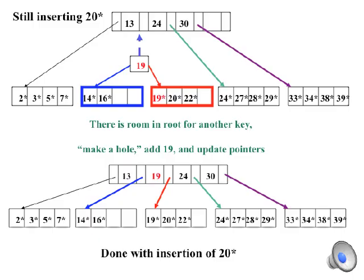The top figure shows that I passed 19 up together with two pointers, one to the blue and one to the red leaf. I've also color-coded two other pointers, green and purple, to the right. This top figure shows that there is room for 19 at the root. So as shown in the bottom figure, I make 19 a new key of the root and update the root's pointers accordingly. Now I am done with the insertion of 20, which caused all this activity.